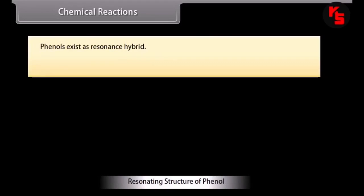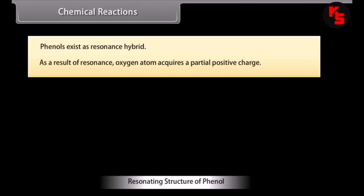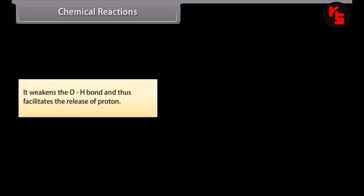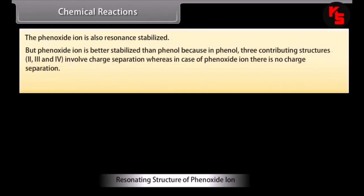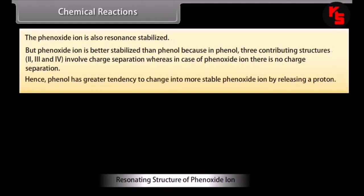Phenols exist as a resonance hybrid. As a result of resonance, the oxygen atom acquires a partial positive charge, which weakens the O-H bond and facilitates the release of a proton. The phenoxide ion is also resonance-stabilized and is better stabilized than phenol, because in phenol three contributing structures involve charge separation, whereas in the phenoxide ion there is no charge separation. Hence, phenol has a greater tendency to form the more stable phenoxide ion by releasing a proton.